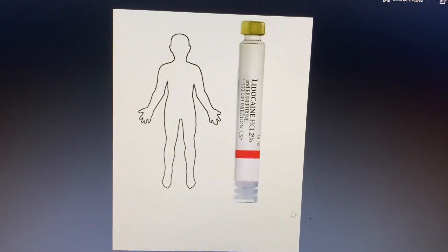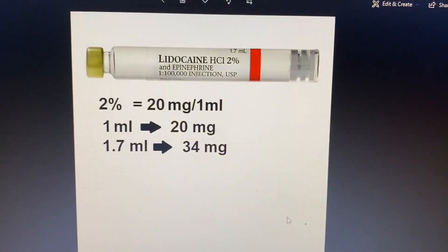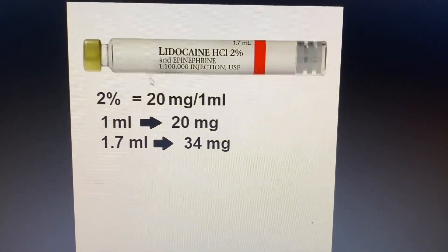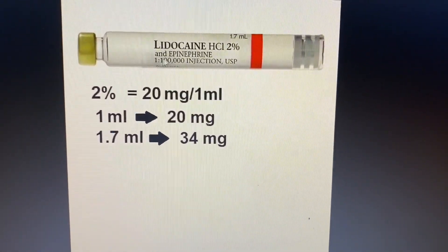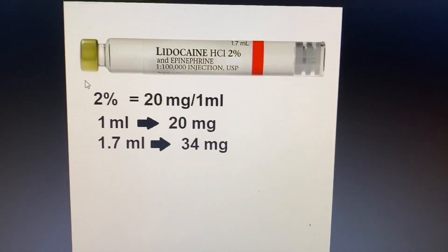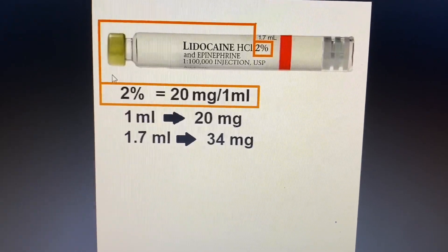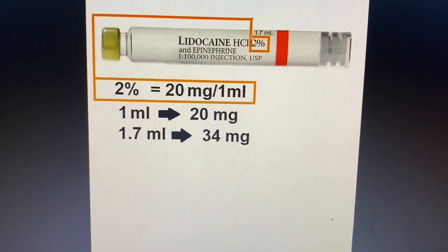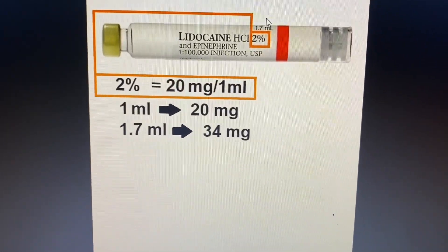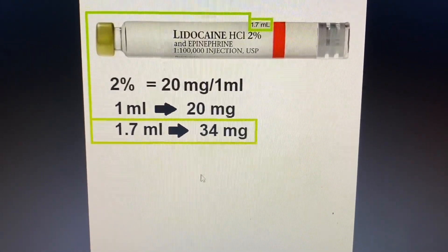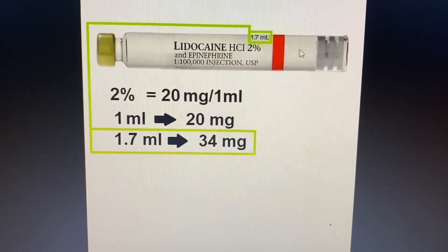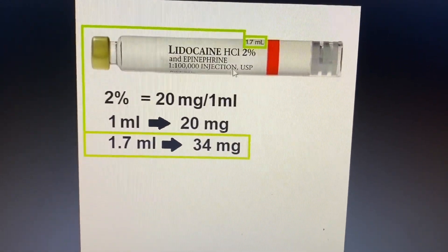What is the maximum amount per carpule that can be given to a specific patient? First, we have to know the amount of local anesthetic in the carpule. In this case, we have lidocaine 2%, which means 20 mg per mL. We have 1.7 mL, so this carpule contains 34 mg of local anesthetic.